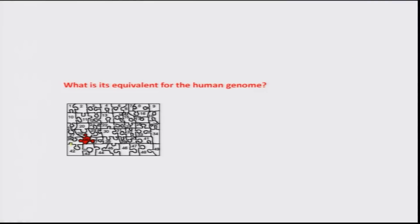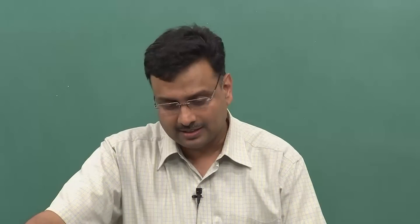That is the approach we use to identify the disease gene. What is the equivalent of the puzzle piece and colour in the human genome? These are nothing but repeat loci. You have in your genome a large number of regions with repeat sequences, and these repeat sequences vary from one region to another. We use these as markers to track segregation across generations — to identify which part of your chromosome has come from which grandparent.